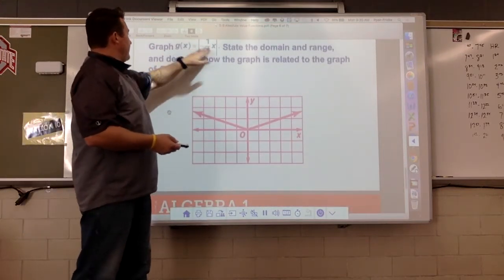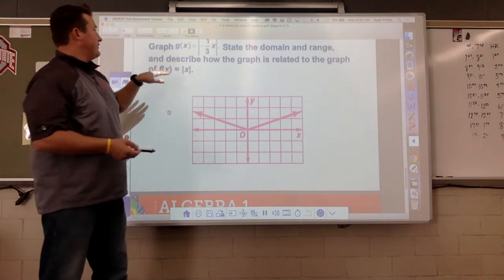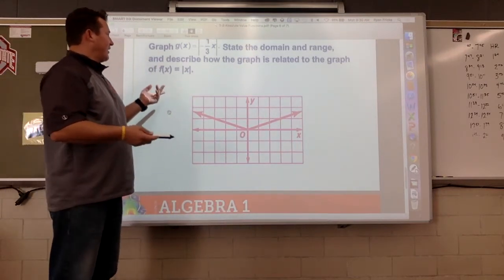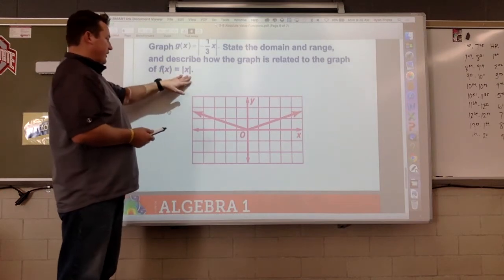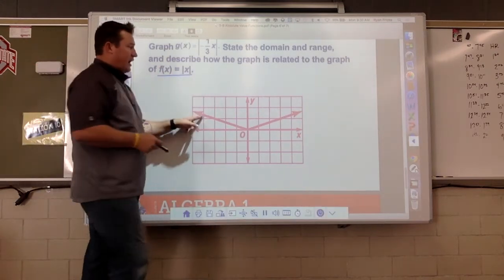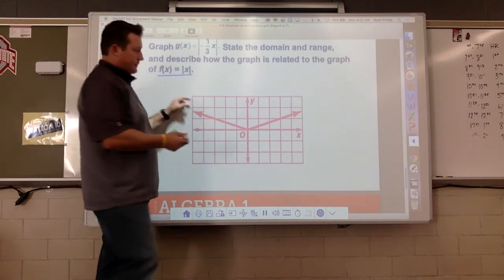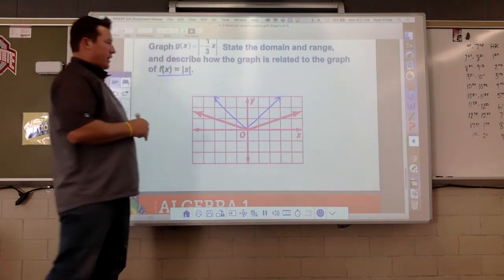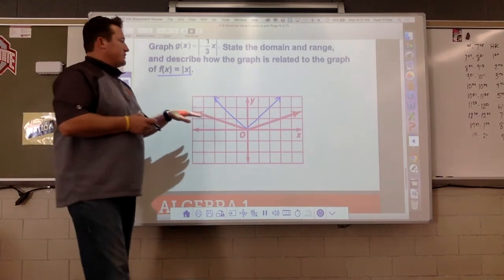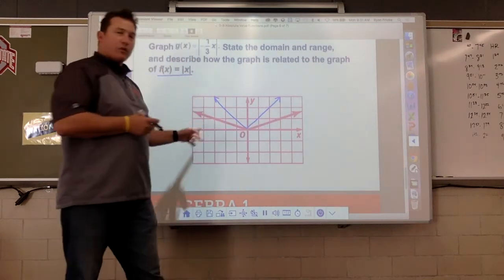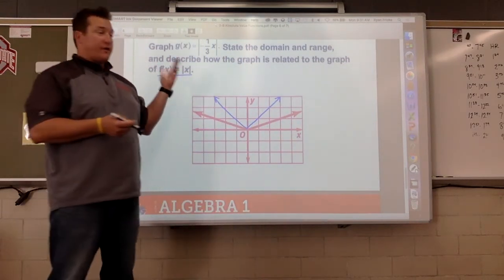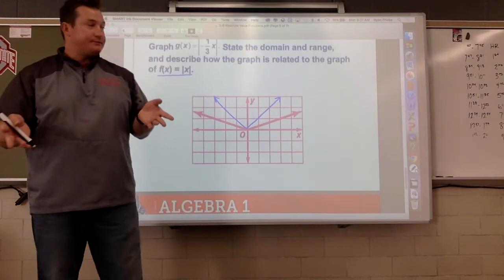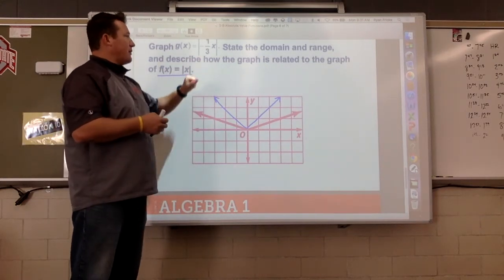All right, graph this, state the domain and range, and describe how the graph is related. Doesn't this one look very similar to the graph we just had a second ago? I mean yeah, it kind of does. So f of x, they've actually graphed this, this is this function right here. Here is my parent function, f of x equals the absolute value of x. So state the domain and range. Well again, domain all real numbers. Range, y values greater than or equal to zero. Again, in all the different ways we can write that, compound inequality, we can write it with an interval notation as well.